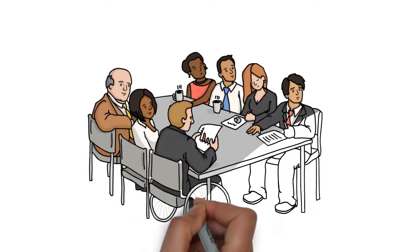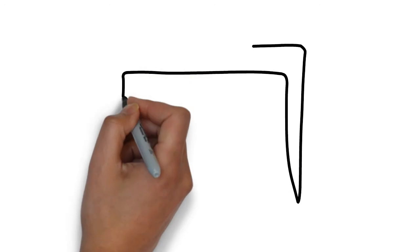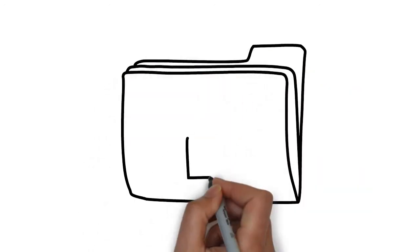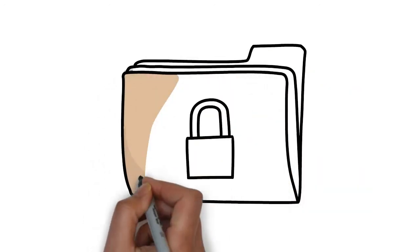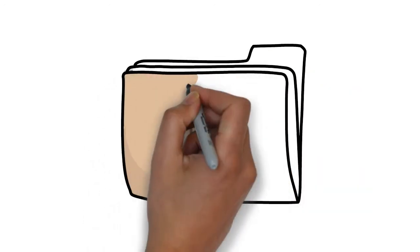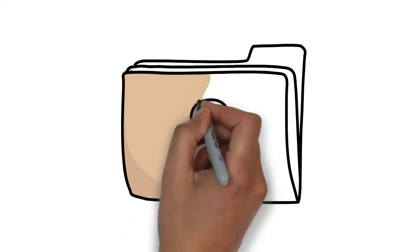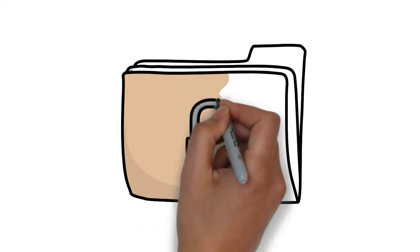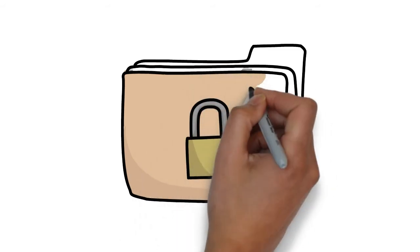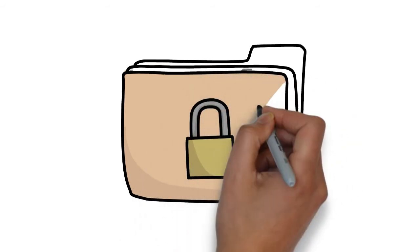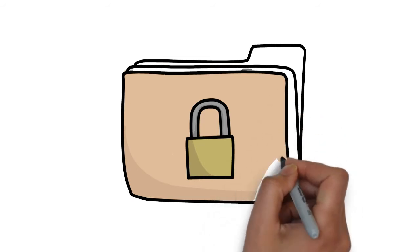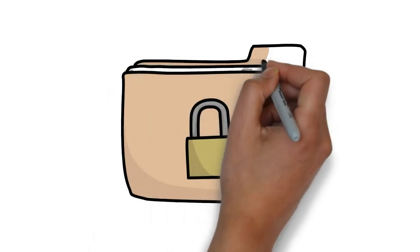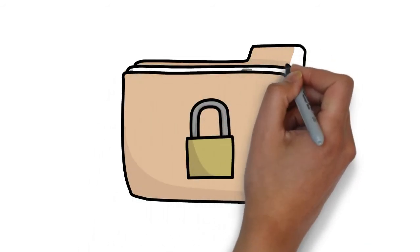So how does 2FA work? First, you have a password. This password is the first layer of authentication. If you use your username and password, that is the first layer of authentication.